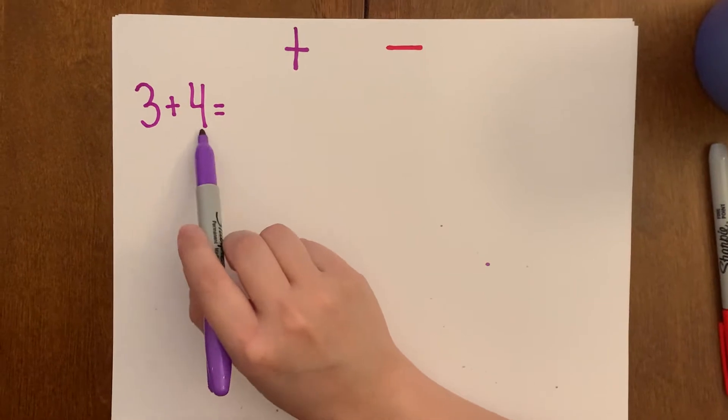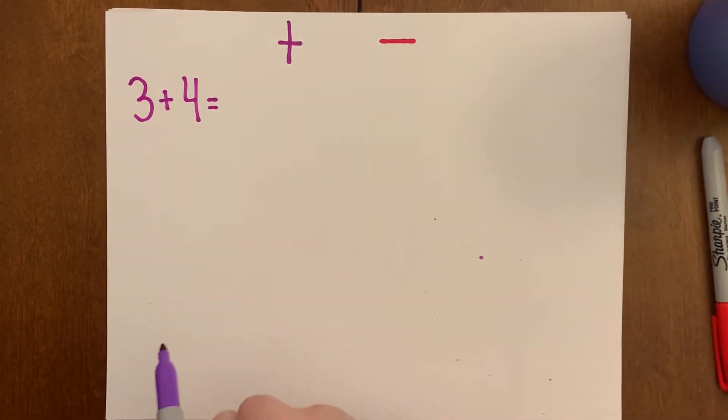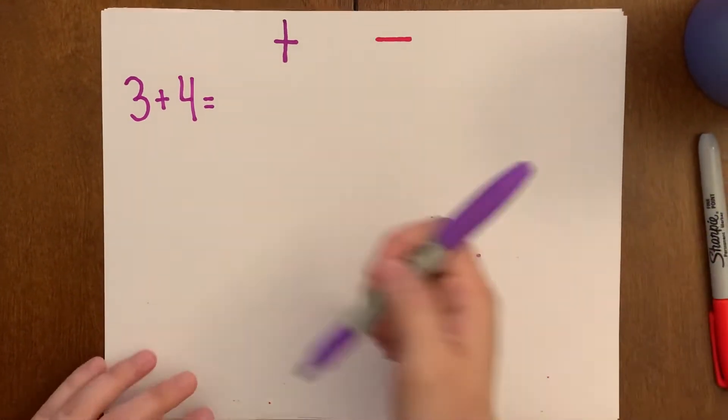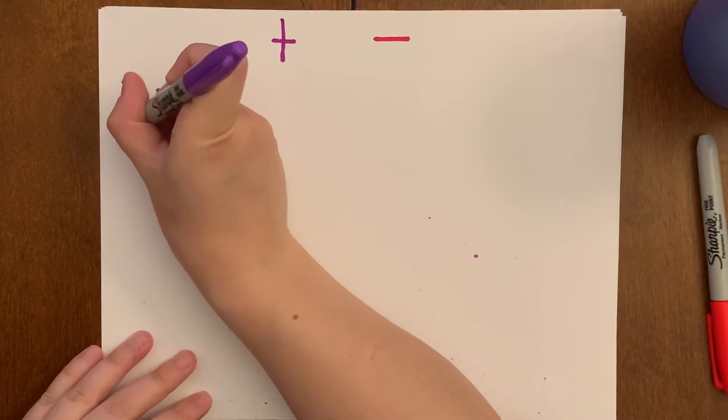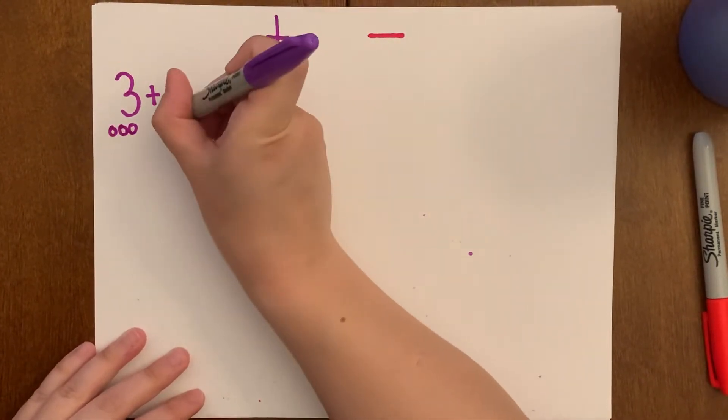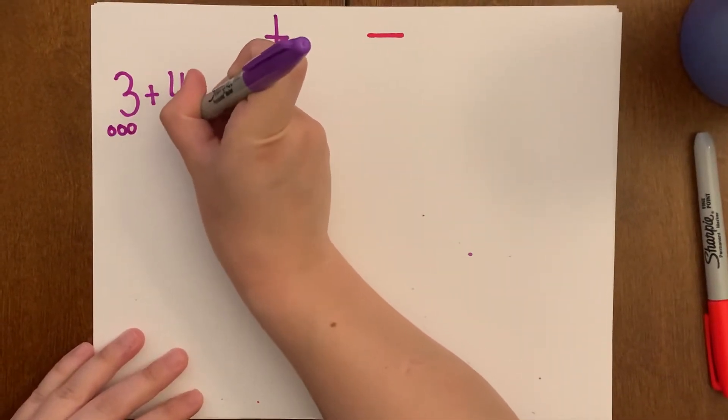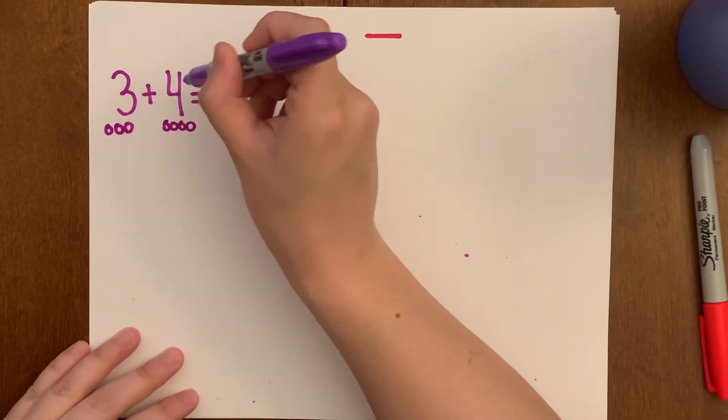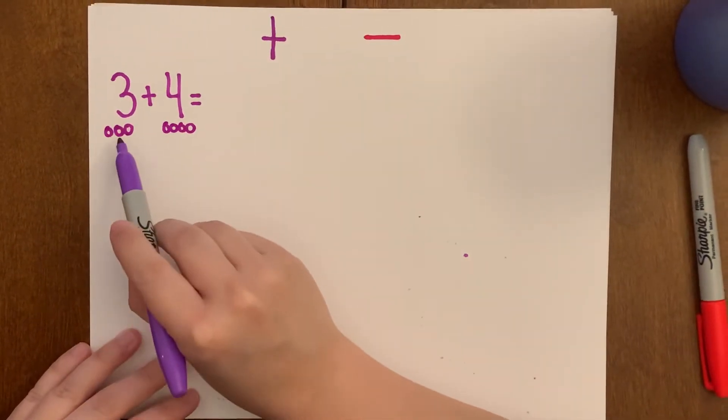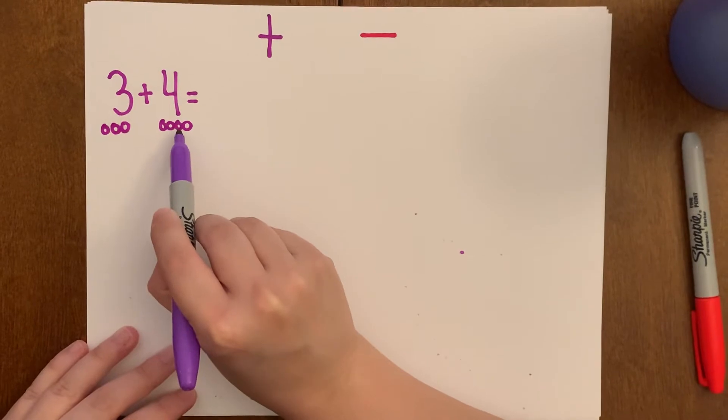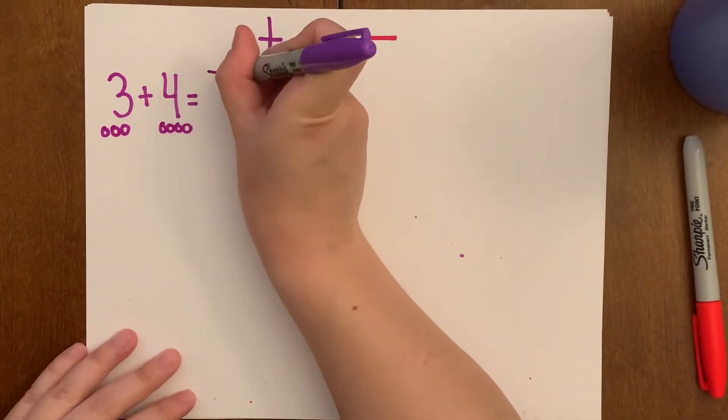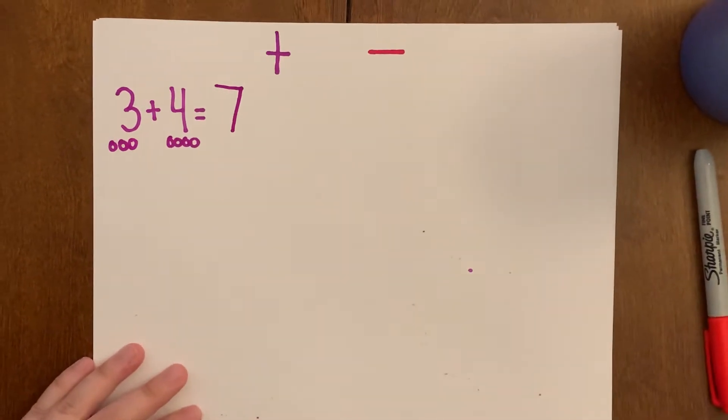So that means we are adding these two numbers together to get one big number. So let's draw a picture to help just in case. So we have three, one, two, three, and then we have four over here. One, two, three, four. Three plus four is one, two, three, four, five, six, seven. Three plus four is seven. Very good.